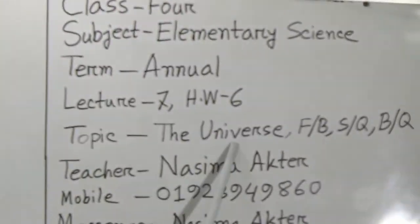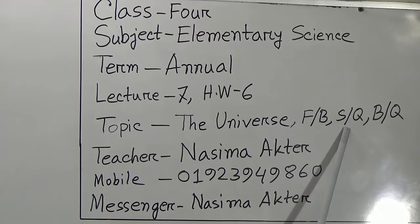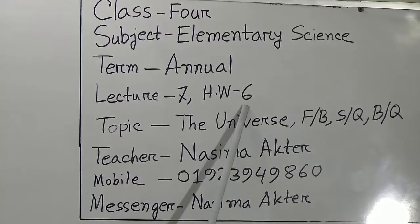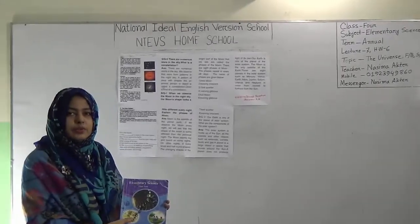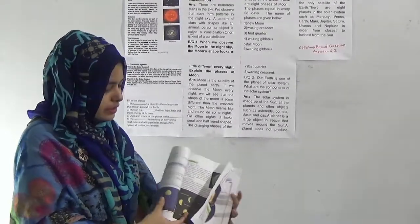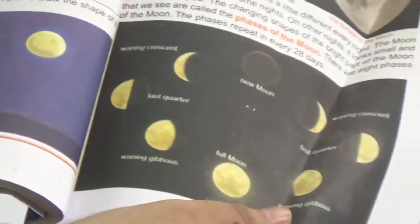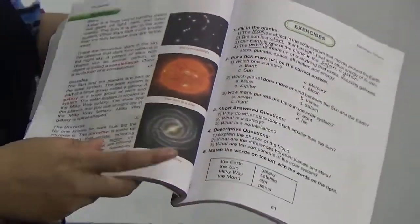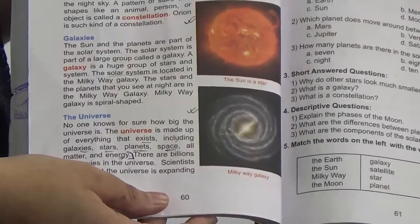This is chapter 8 in your book — the universe. We will do some fill in the blanks, short questions, and broad questions. This is our lecture number 7 and I will give you SW number 6. We have already discussed this chapter. You can see page number 56. Today we will start from page number 60. When watching this class you can open this page and follow your book. Let's start today's class.